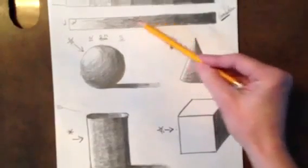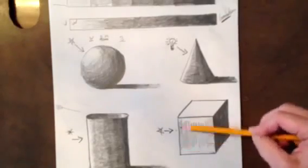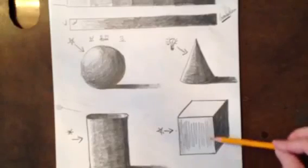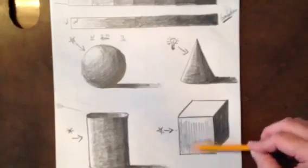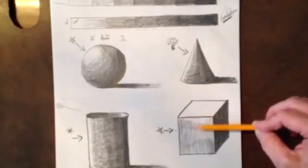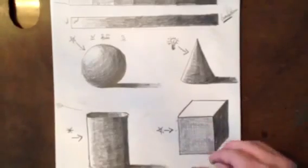So that means that this side might be one of these medium values up here. Notice I'm using the edge of my pencil. I'm doing a little bit of cross hatching for shading. Use your eraser to clean up your lines, your edges, because that does make a difference.